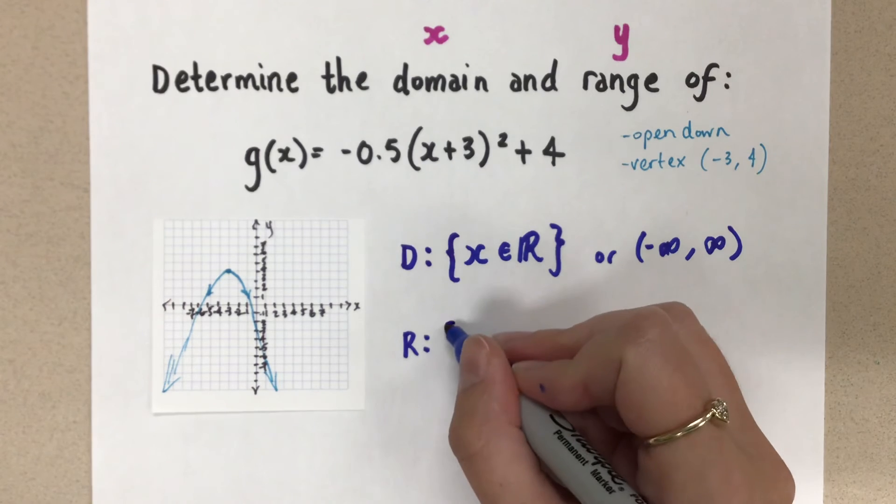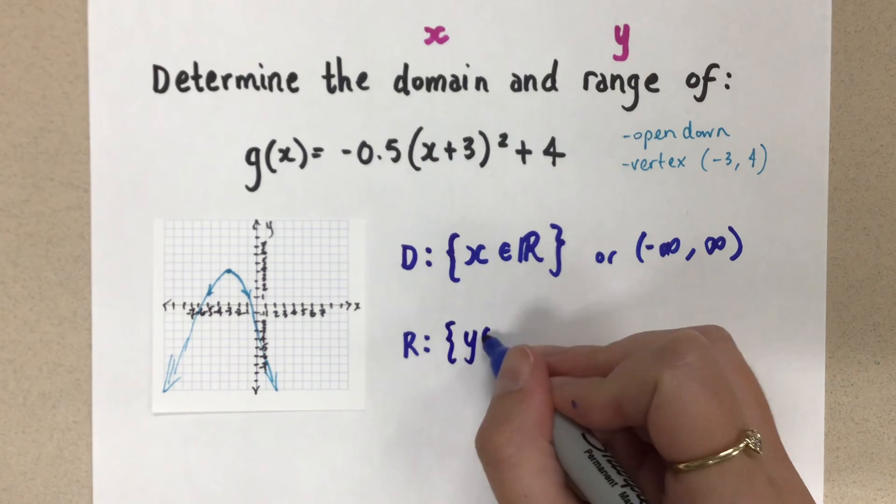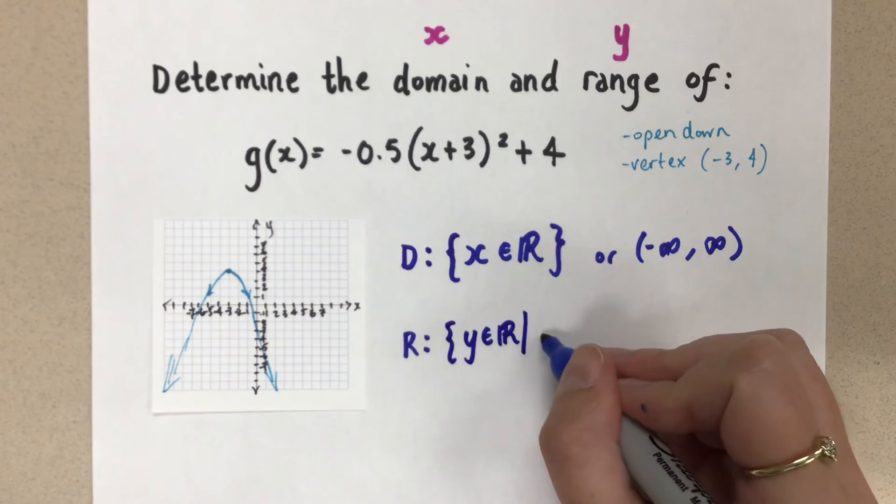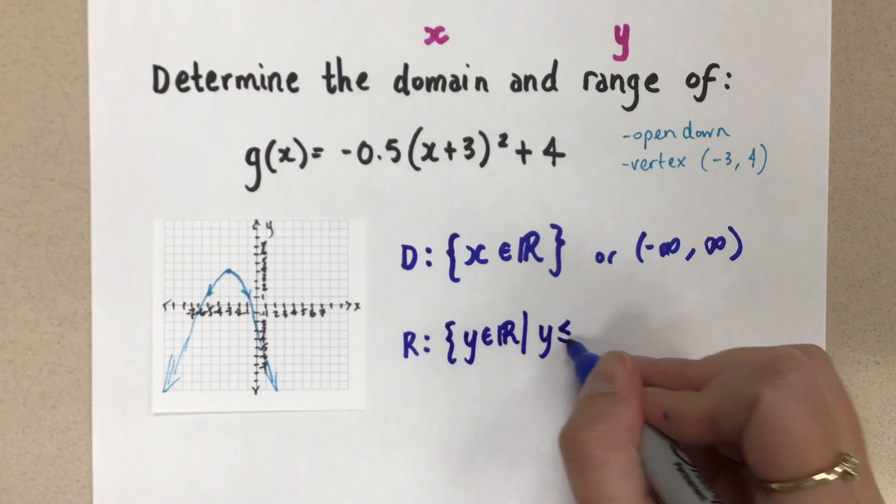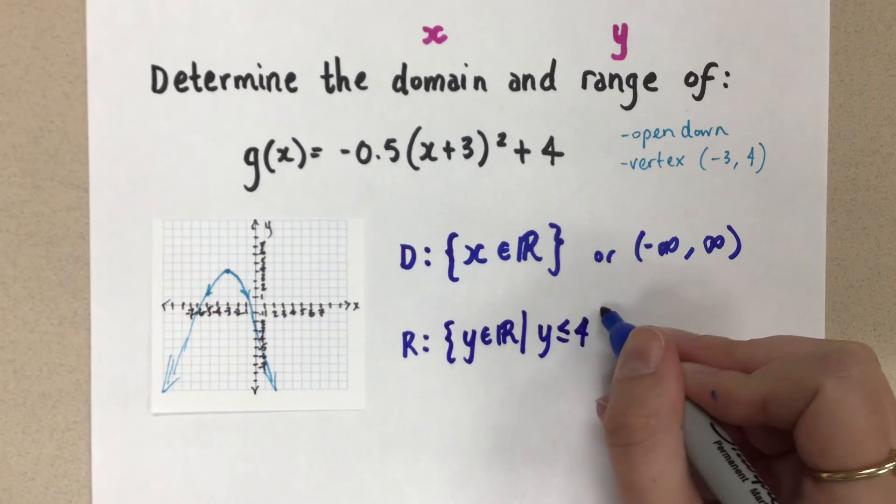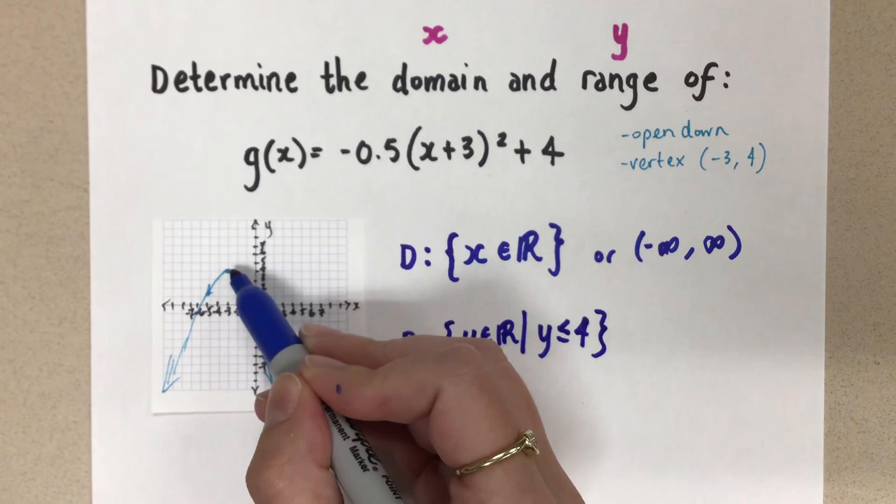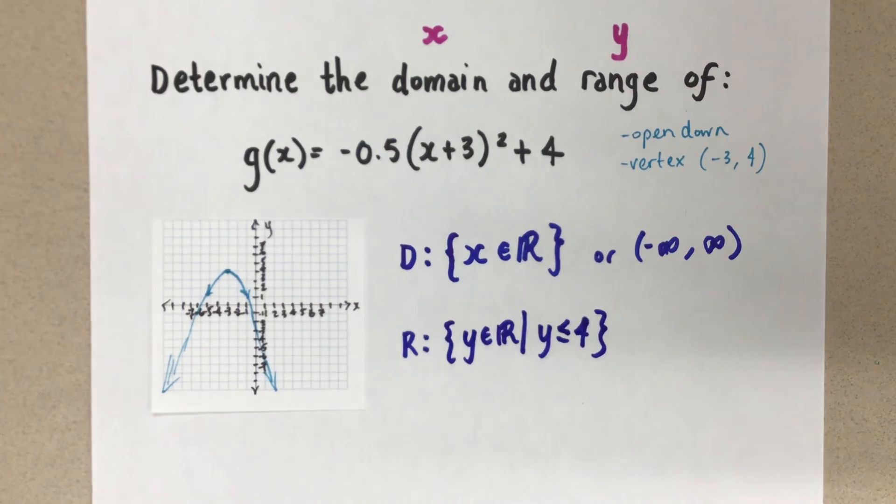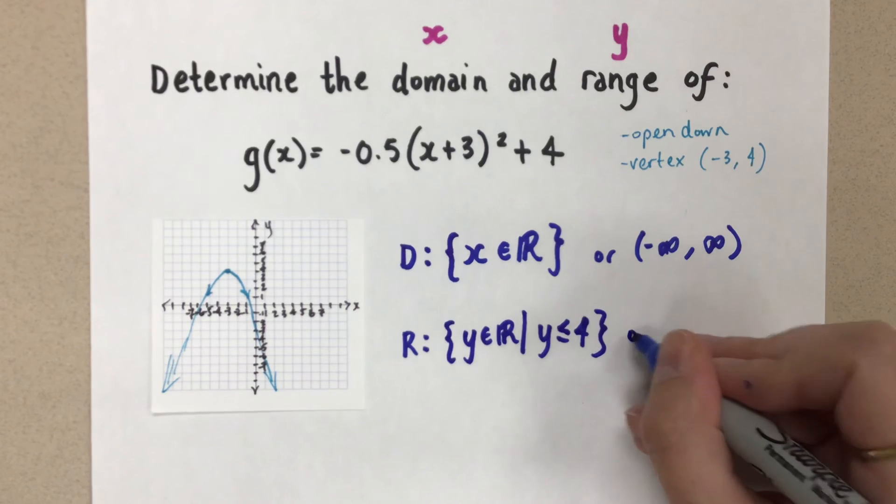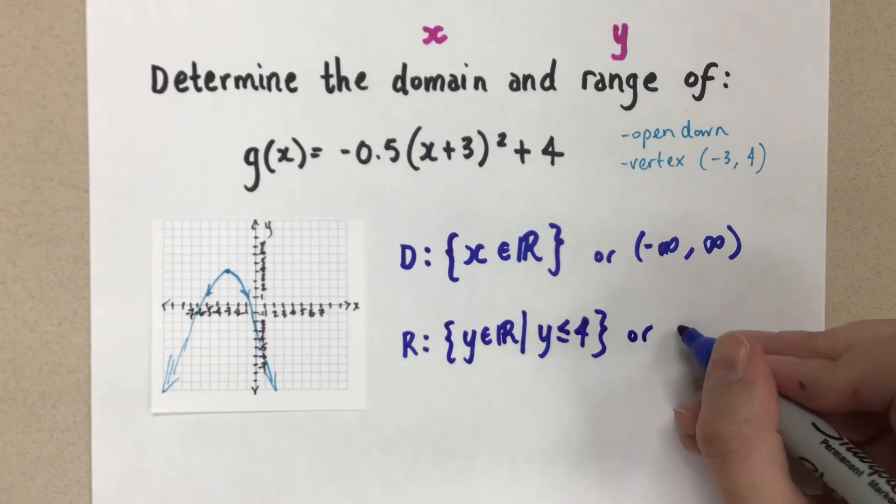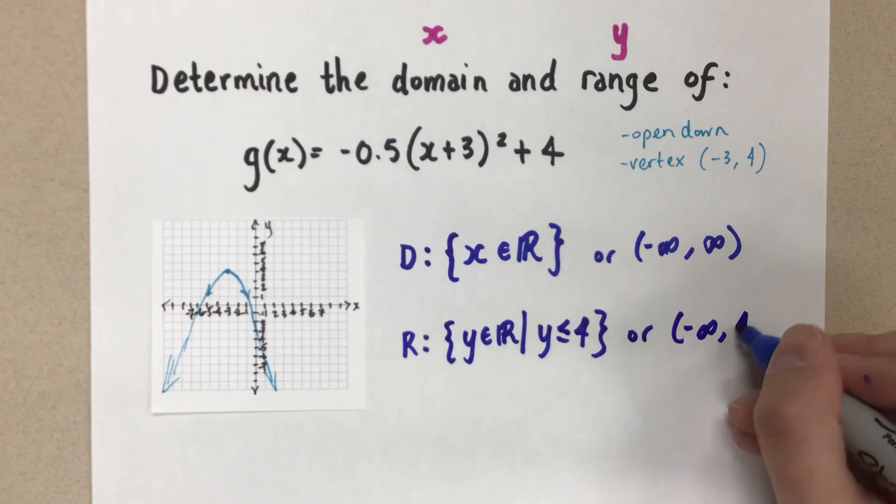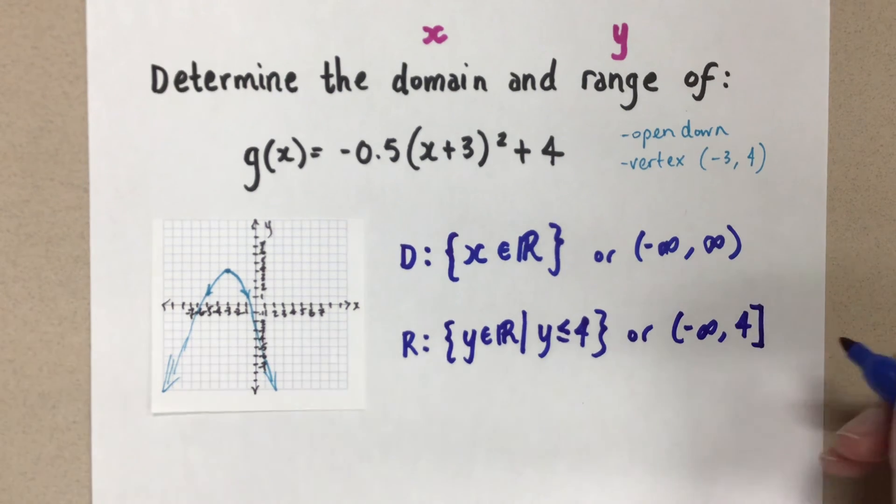So let's write it in our set notation. y is an element of the reals, such that y is less than or equal to 4. And I'm using the equal sign because we do touch the 4, right, on that vertex. So that is important. If you want your interval notation, I'll do that. So we go from negative infinity to positive 4, and that's including the 4.